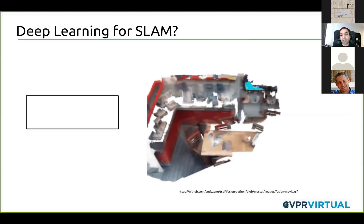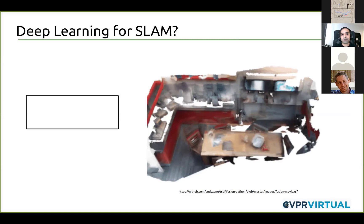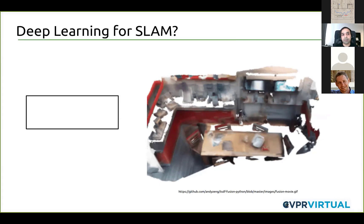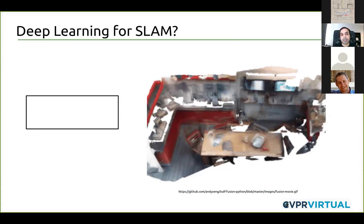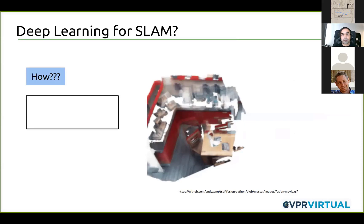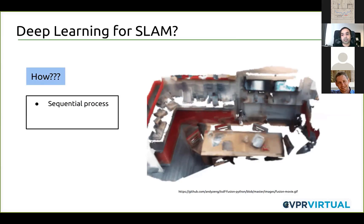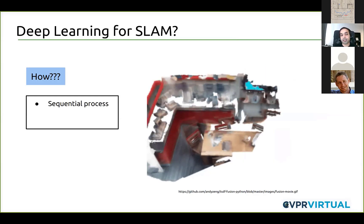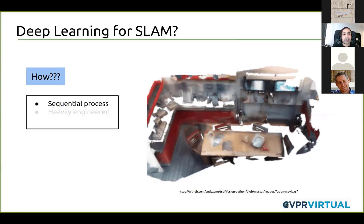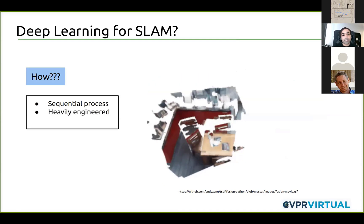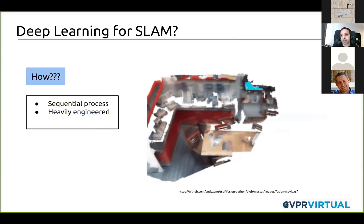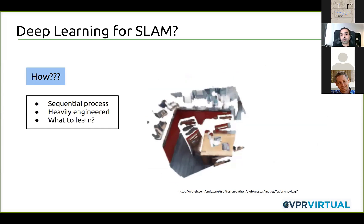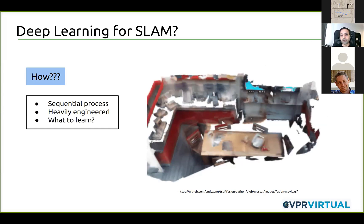The last decade or so has seen lots of improvements in deep learning, and naturally deep learning has been thought of as the next frontier in SLAM. But there are several interesting challenges that SLAM poses for deep learning. SLAM is a sequential process, so all of your IID assumptions that go with traditional ConvNet training on static images go out of the window. Modern SLAM systems are very heavily engineered for specific robot-sensor-environment configurations, and the fundamental question of what in the SLAM pipeline needs to be learned opens up a lot of design choices.